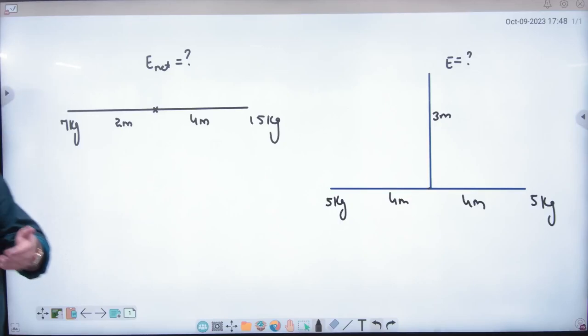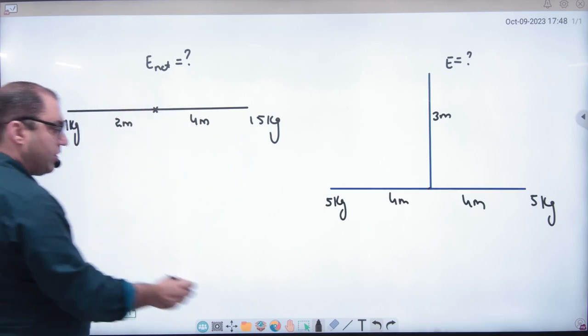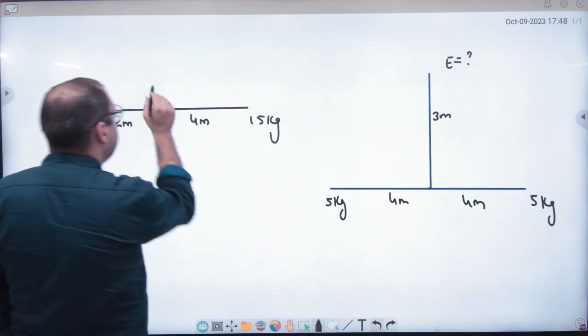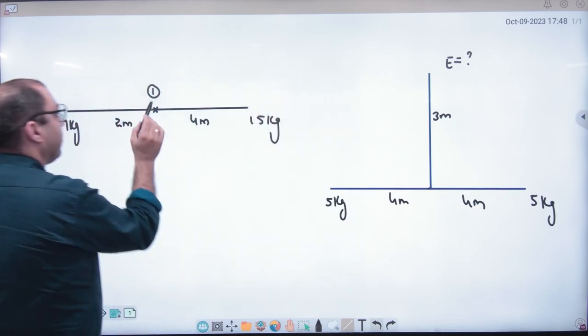So gravitational field intensity, first numerical. We have done last time 7 kg, 15 kg where E should be. I don't need mass. I can imagine here one mass then I can see.